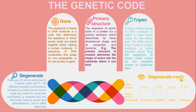The genetic code. The sequence of bases in a DNA molecule is the code that determines the sequence in which amino acids are linked together when making a protein molecule. A sequence of DNA nucleotides that codes for one polypeptide or protein is called a gene. The primary structure is the sequence of amino acids in a protein, and it is the primary structure that determines the three-dimensional shape, properties, and function of the protein.